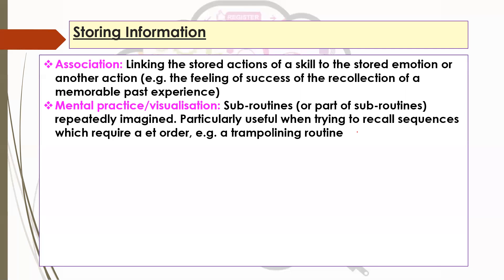Mental practice is particularly useful when trying to recall sequences — anything with a particular order, like a trampolining routine, where you don't have time during the actual performance to stop and think what comes next. But if you've gone over it in your head before, you know it's pike jump, straddle jump, half turn, seat drop, back drop, forward somersault — and if you go over and over it, it just becomes automatic. That storage of information means that when you need to retrieve it, it's just there immediately. One of the challenges is the limited time available, so if you've embedded that information through mental practice, the retrieval process is much quicker because you're going to an image that's very secure in your long-term memory.